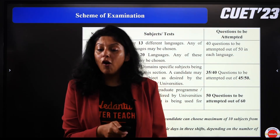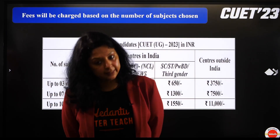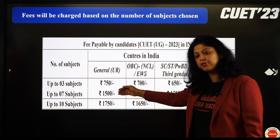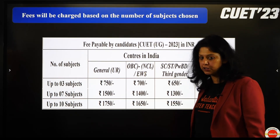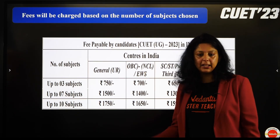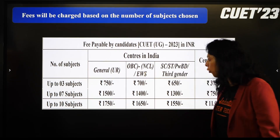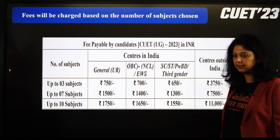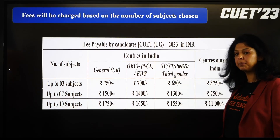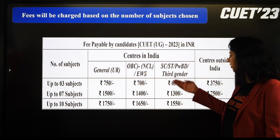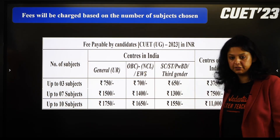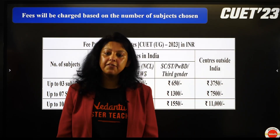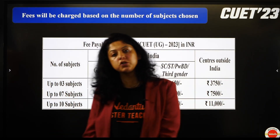Fees की बात करते हैं: General/unreserved — 3 subjects के लिए ₹750, 7 subjects के लिए ₹1500, 10 subjects के लिए ₹1750। OBC और Economic Weaker Section — ₹700, ₹1400, ₹1650। SC, ST, persons with disability, और 3rd gender — ₹650, ₹1300, ₹1550। Centres outside India की fees ज्यादा है — ₹3750, 7 subjects के लिए ₹7500, और 10 subjects के लिए ₹11,000।